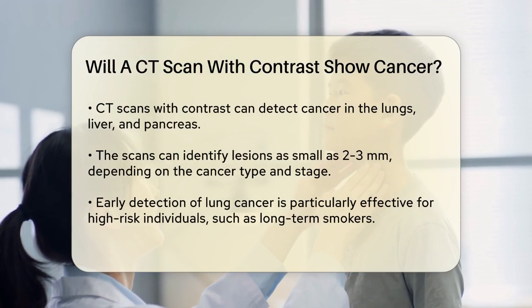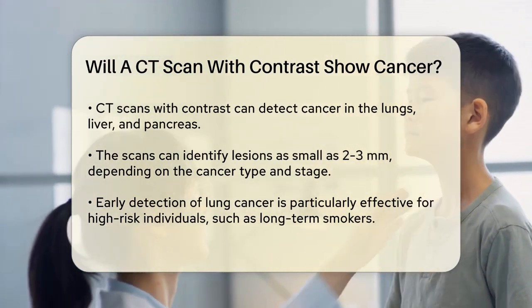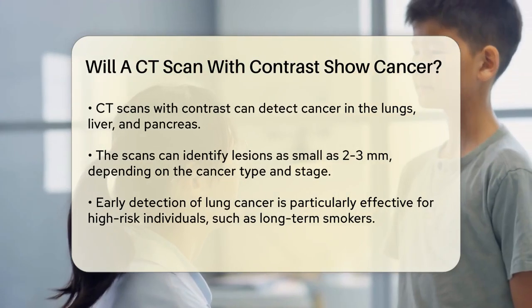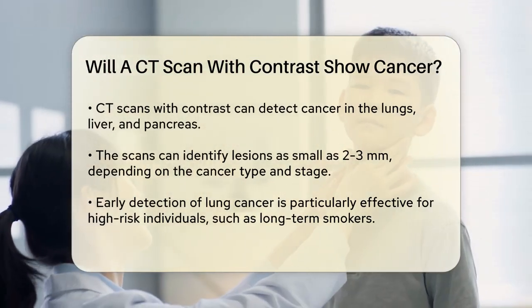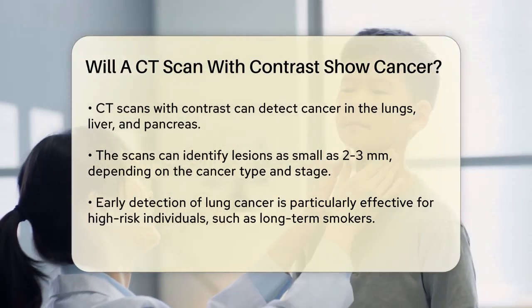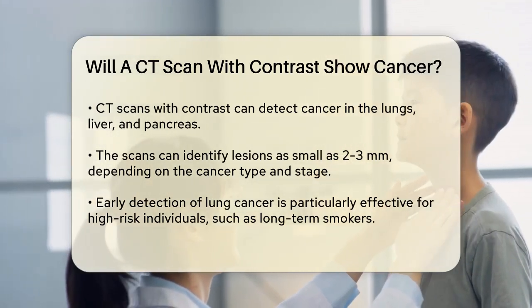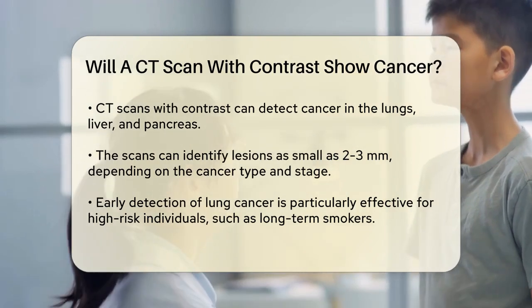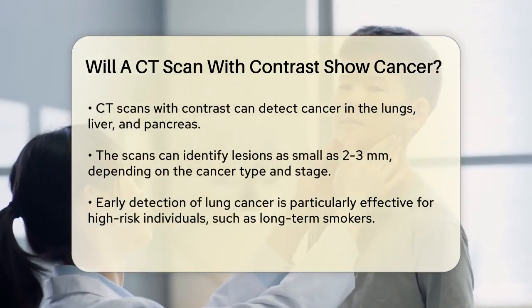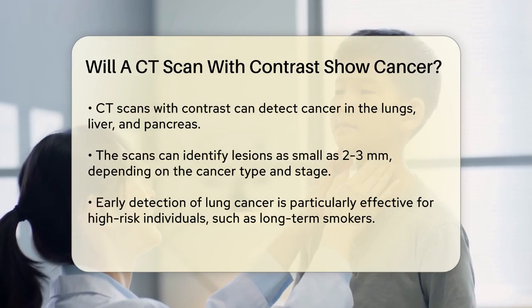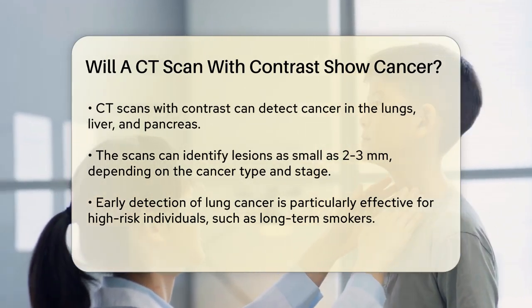A CT scan with contrast can indeed detect cancer, especially in areas like the lungs, liver, and pancreas. It is highly sensitive and can identify lesions as small as 2-3 mm. However, the effectiveness of the scan depends on the type and stage of the cancer. CT scans are particularly effective in early detection of lung cancer, especially for individuals at high risk, such as those with a long history of smoking.